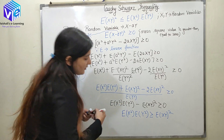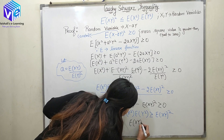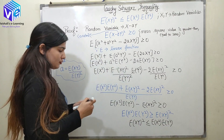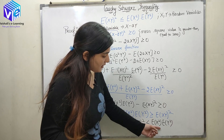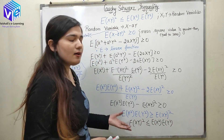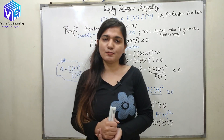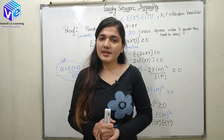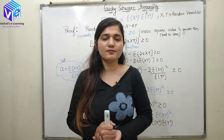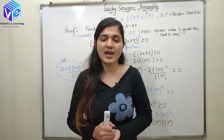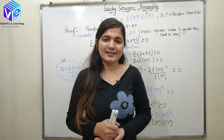I hope you can see that this can be written as: E[XY]² is less than or equal to E[X²]·E[Y²]. The Cauchy-Schwarz inequality is proved. If you have any doubts, you can put them in the comment box below. I hope you like this video — if you do, subscribe to the channel, share it with your friends, and please push the like button. Thank you.